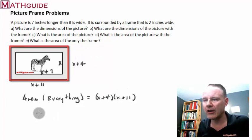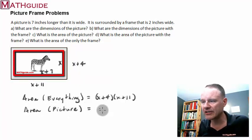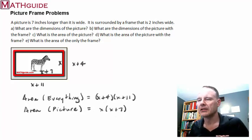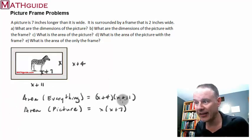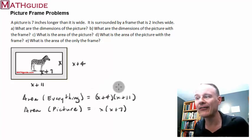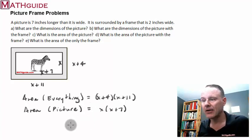We know that it's x plus four times x plus 11. Then we also know what the area of the picture is. In other words, just the picture. So the area of just the picture is x times x plus seven. Now we're going to need these two because it says, what is the area of only the frame? Well, what we're going to do is we're going to take everything, the area of everything, and we're going to subtract away the area of the picture. And that'll give us just the area of what's left over, which will be the frame.